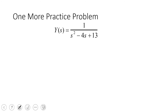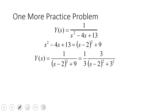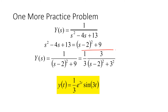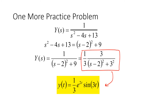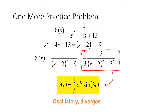Let's do one more practice problem. Completing the square and matching Laplace table forms, we get the time-domain solution. It oscillates and it diverges — the exponential term has a positive exponent, not negative, so it goes to infinity while oscillating.